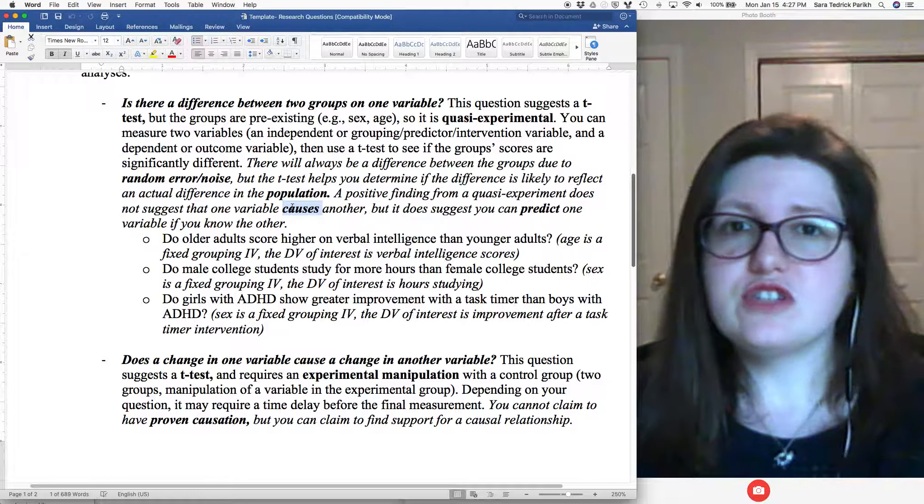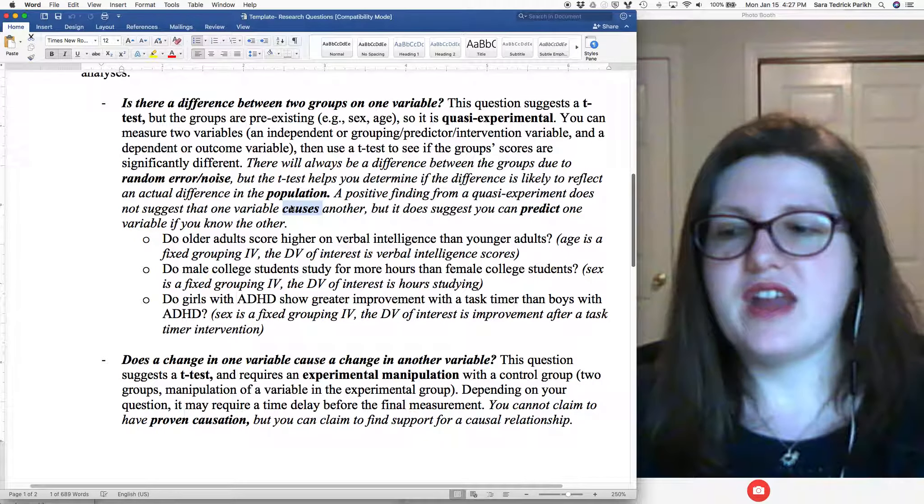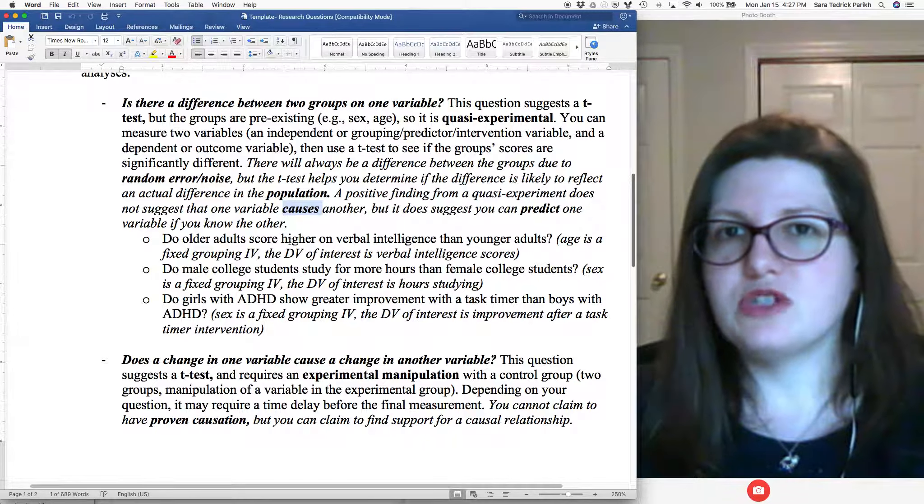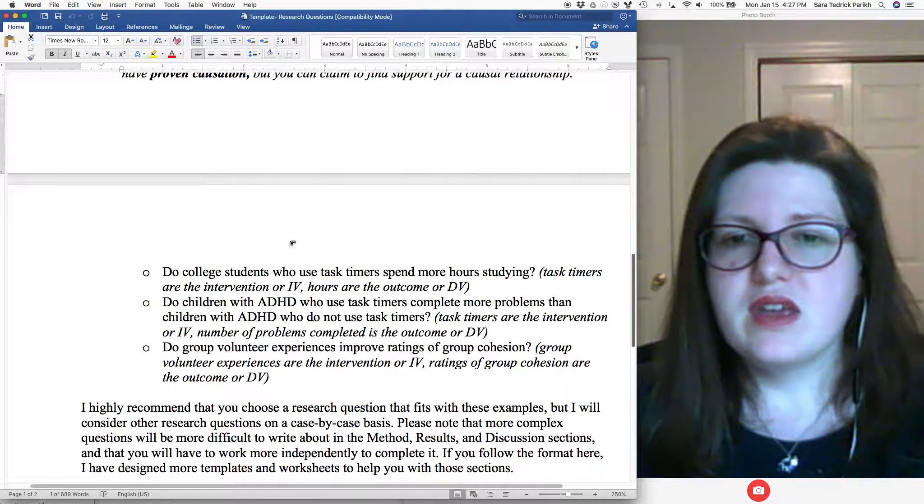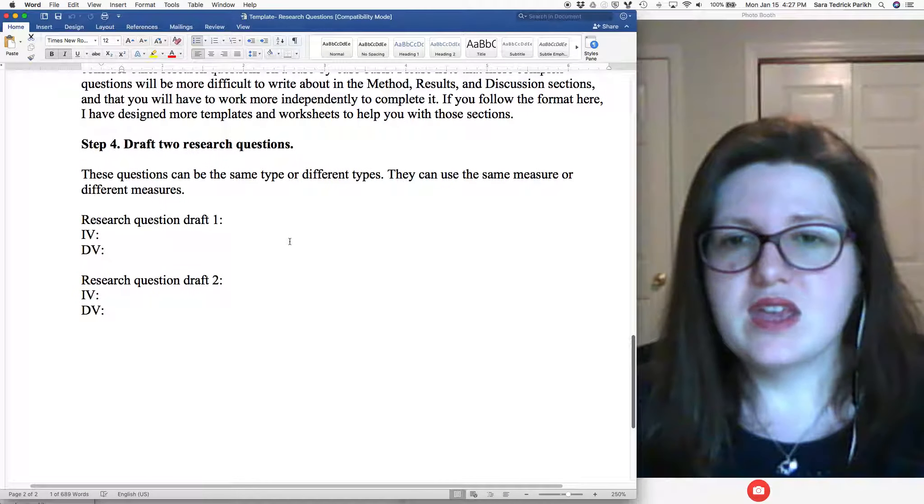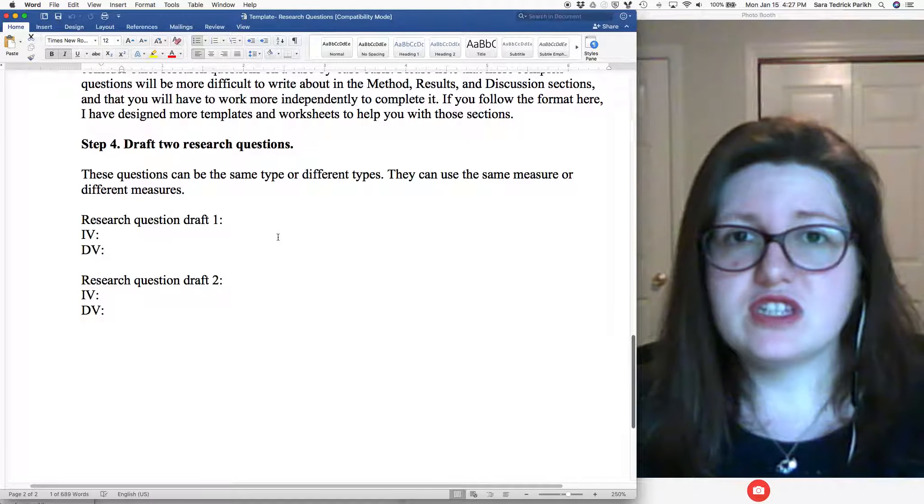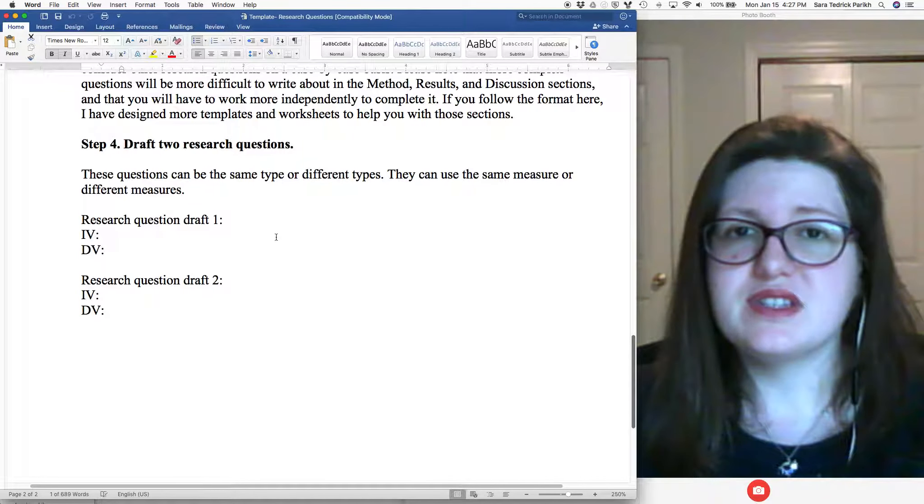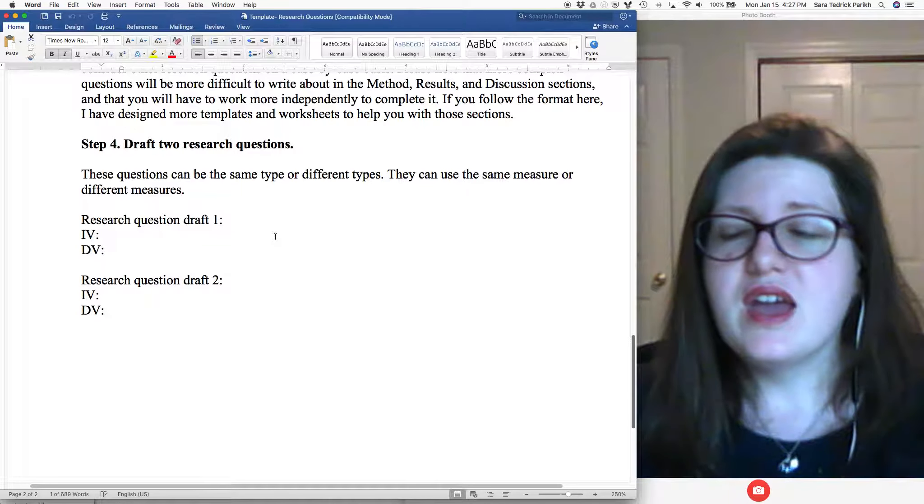Don't say you've proven anything. If you're using the quasi-experimental, you can't even really say that you think it causes it. You can just say, we think they're associated. So we think that when one happens, the other tends to happen also. We can't say which one causes which.